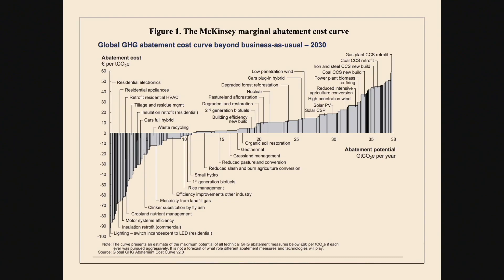What's interesting about this graph is that the region on the left side that's negative — those are actually situations where the cost is negative, which means that by not doing these things, people or firms are throwing away money. Some of these things are about residential electronics, fuel-efficient vehicles, energy-saving light bulbs — things you may be familiar with. I'd like to call these very low-hanging fruit.